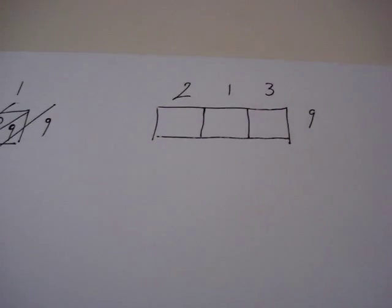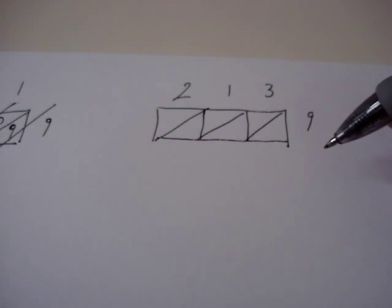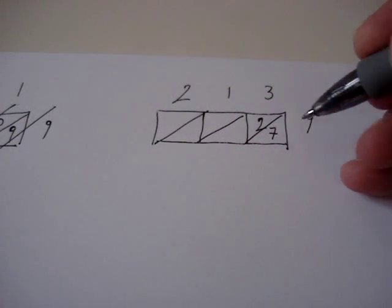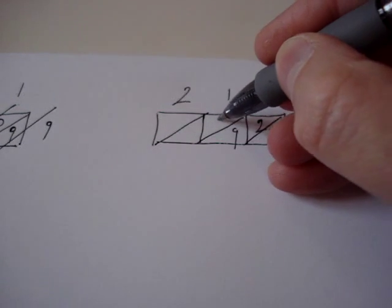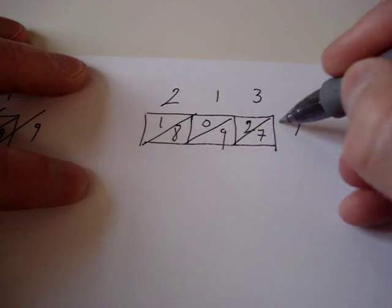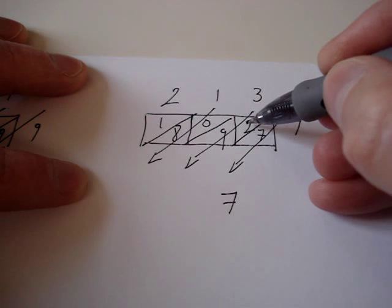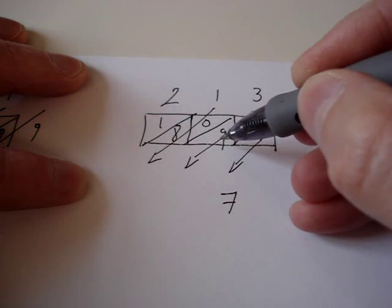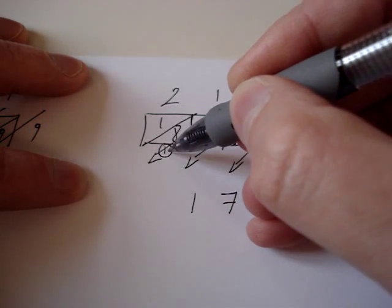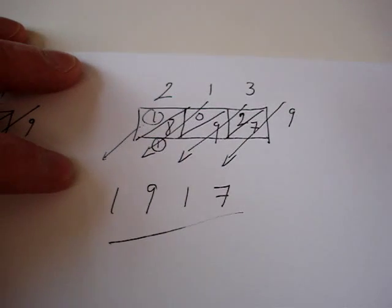As the numbers get bigger again, we draw a box for each number. It's a very visual way to keep track of what you're doing. So this would be 2 times 7, 9 times 1 is 9, this is 0, 9 times 2 is 18. And again we add up in this direction. So this would be 7, 2 plus 9 is 11, and the 1 goes to the next column. 8 plus 1 plus 0 is 9, and 1 is left. There's the result.